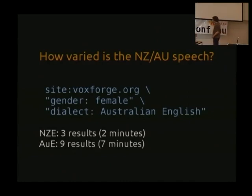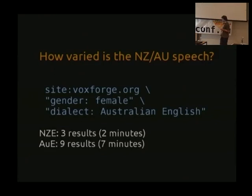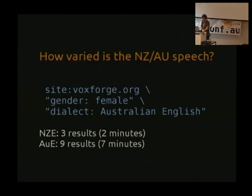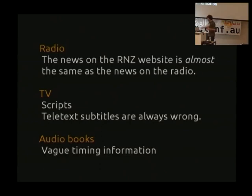If you look at the demographics of VoxForge contributors - they're sort of the same as this conference - young men who care about open source things and are techy enough to do that stuff. So there's hardly any female speech, hardly any older people's speech, hardly any young people's speech - it's all young adults. So if you used that you'd make a good model of kind of geek-speak, but not a good model of general Australian or New Zealand speech, even if you had 150 hours - and you have less than one hour.